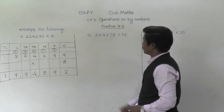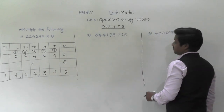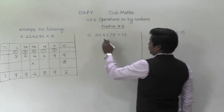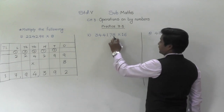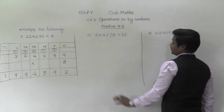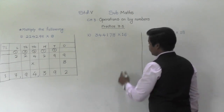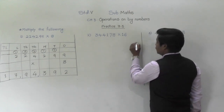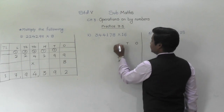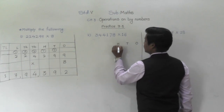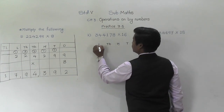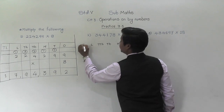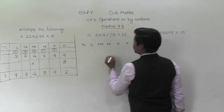Let's solve the next question — Example 2: 3,44,178 into 16. We write the place values: ones, tens, hundreds, thousands, ten thousands, lakh, ten lakh. Let's try. I am not going to make boxes again and again — you have to make them in your notebook.